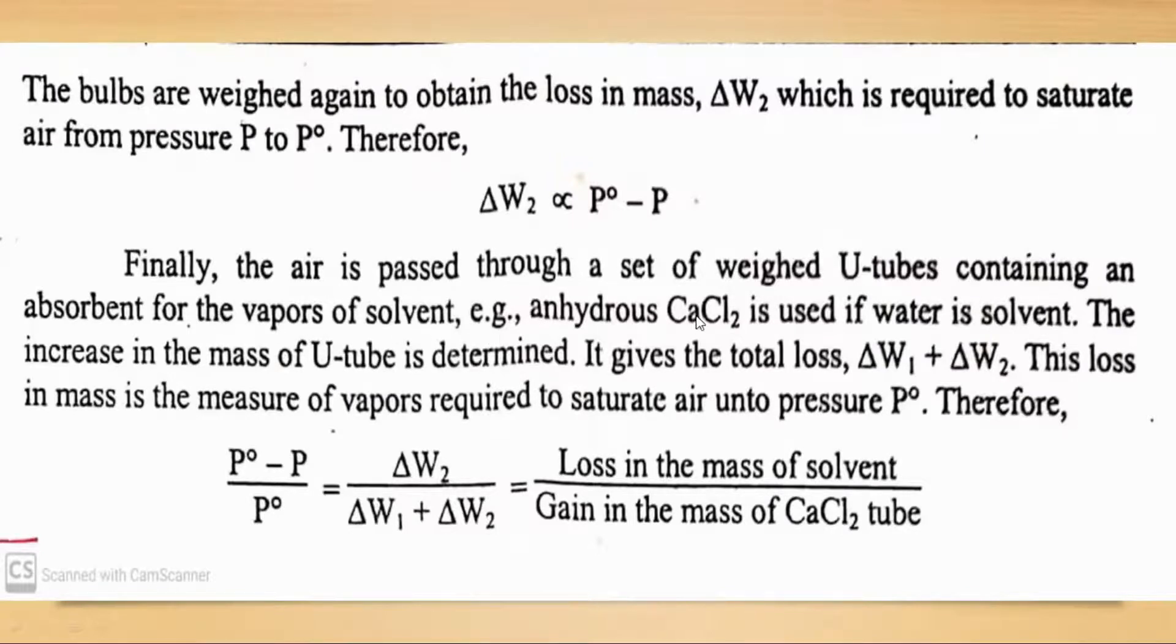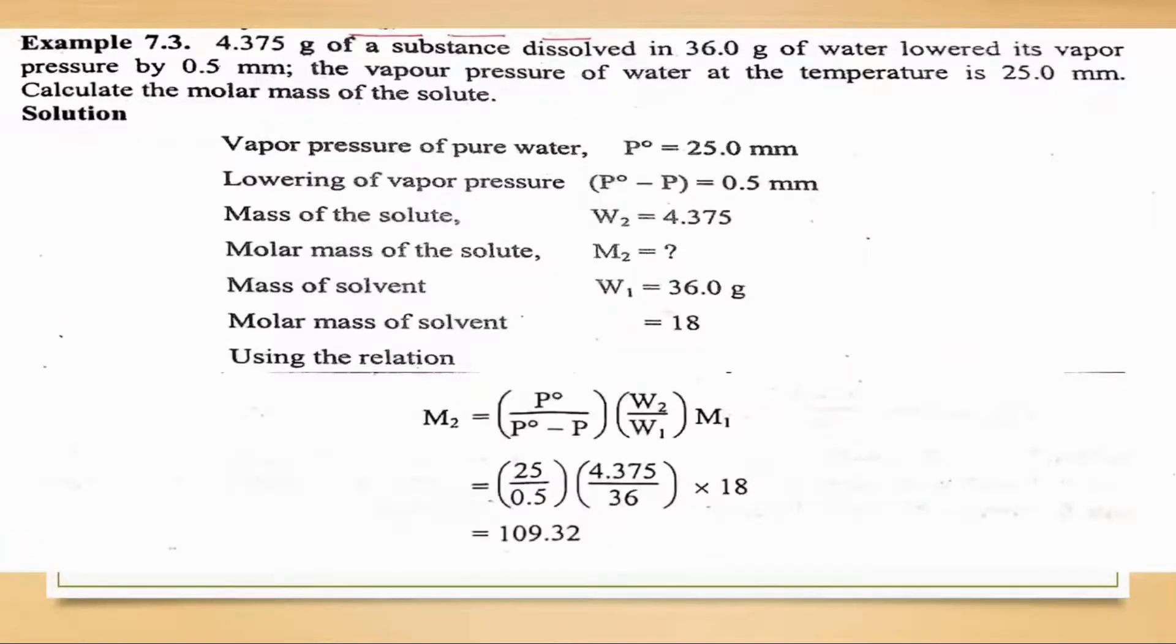Finally the air is passed through a set of weighed U-tubes containing an absorbent for the vapor of the solvent, calcium chloride if using water as solvent. The increase in the mass of the U-tube is determined to give the total loss W1+W2. This loss in the mass is the measure of vapor required to saturate air up to pressure P°. Therefore using this equation you can measure their values. The diagram is also given. Then we will do numericals related to this.